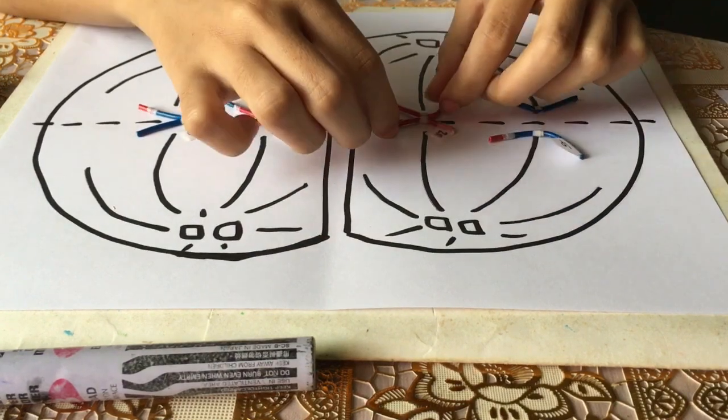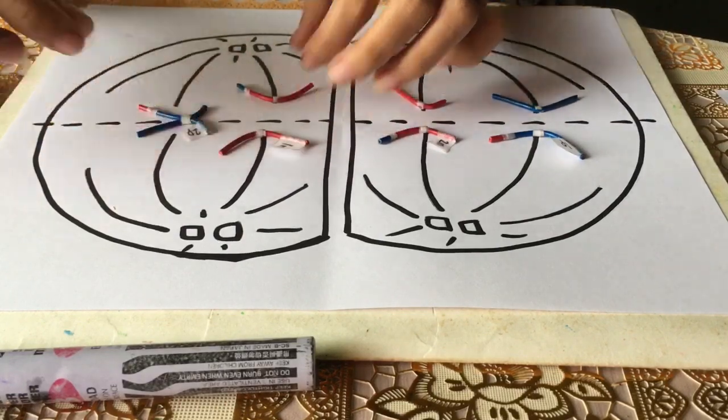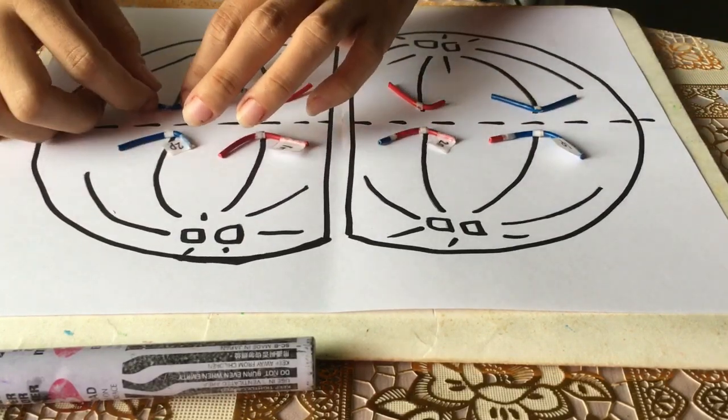In metaphase II, the sister chromatids are then pulled to opposite poles due to the action of the meiotic spindle. The separated chromatids are now individual chromosomes.